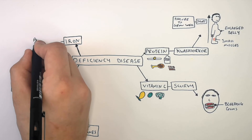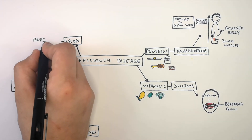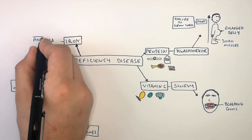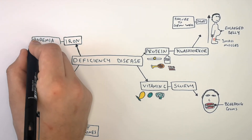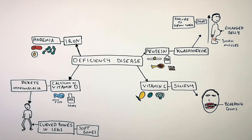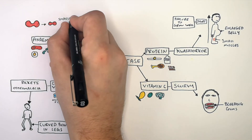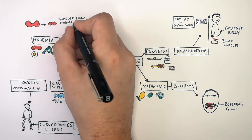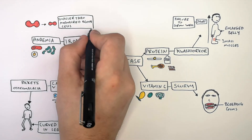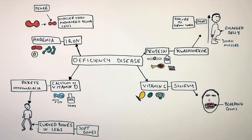Not eating enough iron can cause a deficiency disease called anemia, and people can feel anemic. Foods that are high in iron include red meat, spinach and eggs. Not eating enough iron and having anemia will cause your red blood cells to be smaller than normal, and you will also have fewer red blood cells. This can lead to tiredness and lethargy.